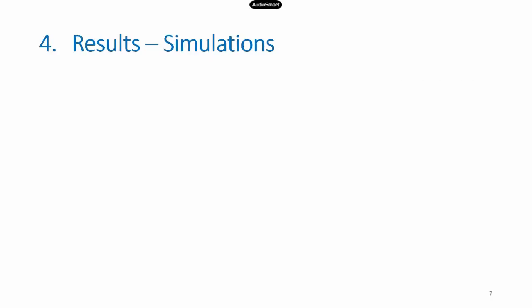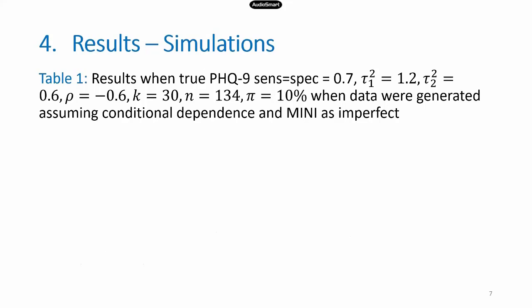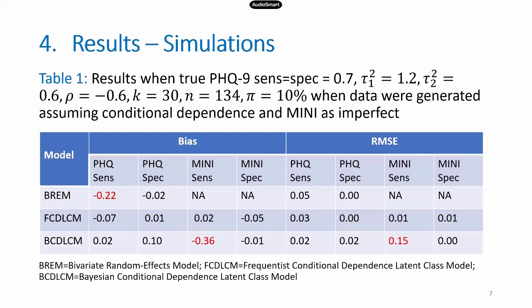I won't describe the full simulation design, but we conducted an extensive simulation study varying different model parameters and data characteristics, running 1,000 repetitions per scenario. In the scenario shown, we assumed a true sensitivity and specificity of 70%, with tau-squared terms representing between-study variances for logit-transformed sensitivity and specificity. K is the number of studies, N is the number of participants per disease group, and pi is the depression prevalence. Data were generated assuming conditional dependence, with the Mini treated as an imperfect reference standard. This table shows bias and root mean square error for the four primary parameters: PHQ-9 sensitivity and specificity, and Mini sensitivity and specificity.